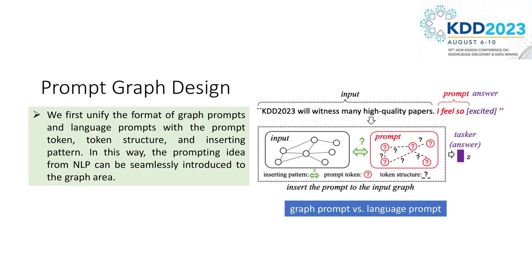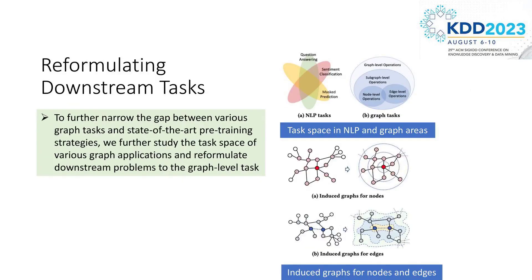In this work, we introduce the prompt method from NLP to graphs under the multitask background. Specifically, we propose to unify the format of the language prompt and graph prompt in one way so that we can smoothly transfer the prompt idea from NLP to graphs. We also propose an effective way to reformulate node-level and edge-level tasks to graph-level tasks, which can further match many pre-training pretexts.